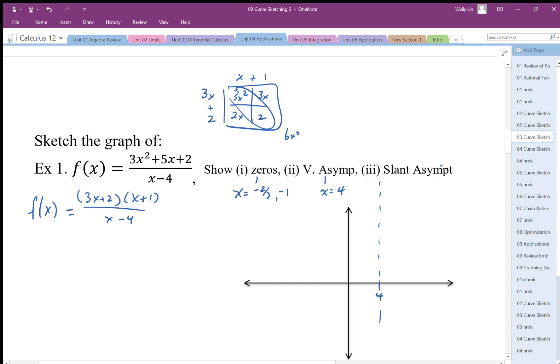My slant asymptote I need to generate from my division statement. When I divide this, I'm going to divide x minus 4 into 3x squared plus 5x plus 2. The degree of the numerator is 1 higher than the denominator, so I should expect my asymptote to be a linear function.